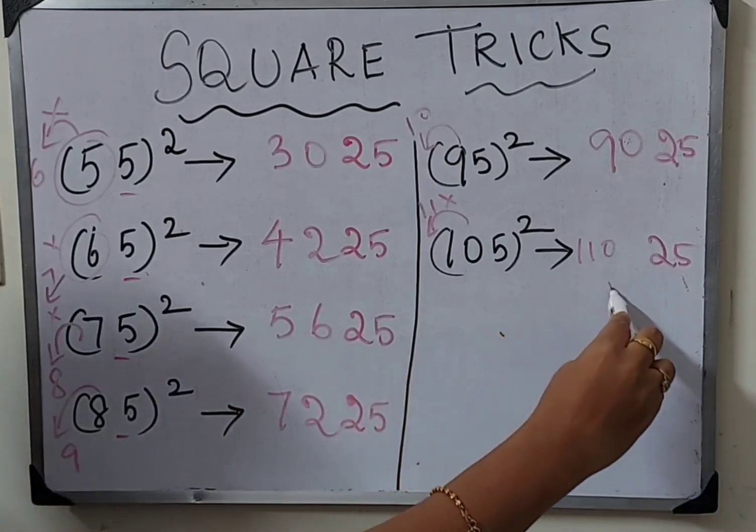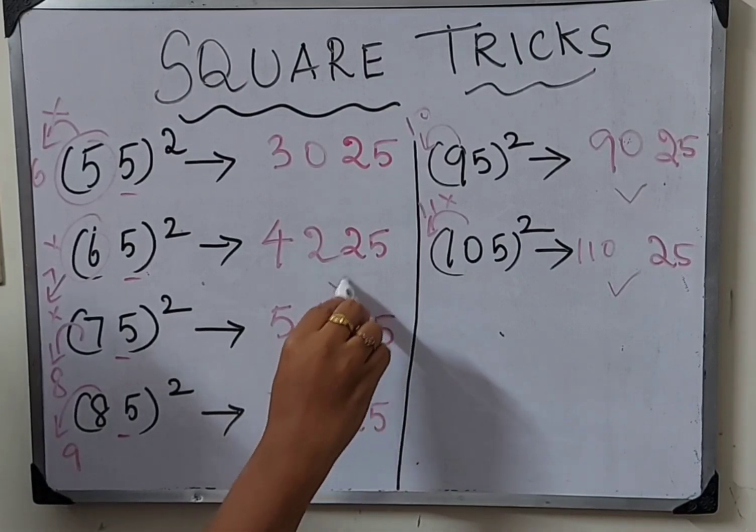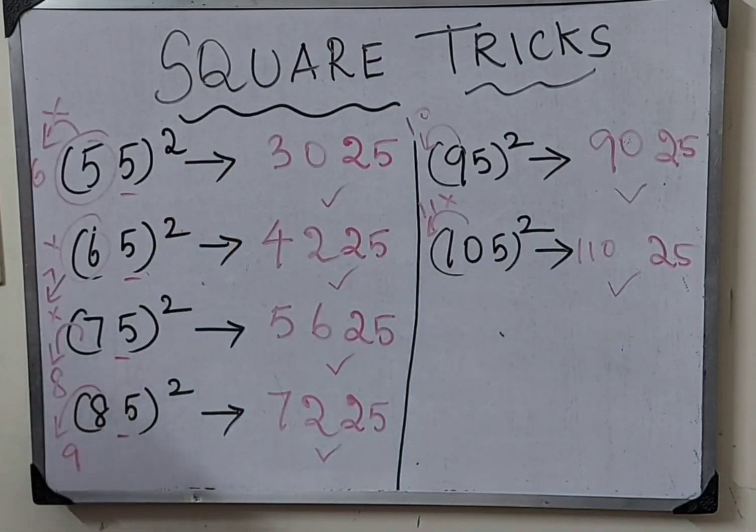For 105 square, 10 after is 11, so 11 times 10 is 110, answer is 11025. This way we can find square numbers easily within fraction of seconds.